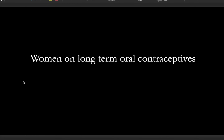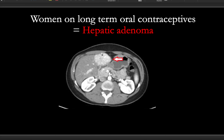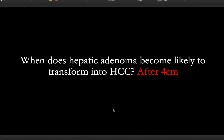If we see a woman on long-term oral contraceptives, you can almost guarantee it's a hepatic adenoma. It's a very homogenous, solid, cystic mass. One thing people will want to know is whether this is benign or cancer. The cutoff you're looking for is 4 centimeters. If a woman has a hepatic adenoma 5 centimeters or above, you're basically going to take it out for peace of mind, otherwise it could malignantly transform into hepatocellular carcinoma.